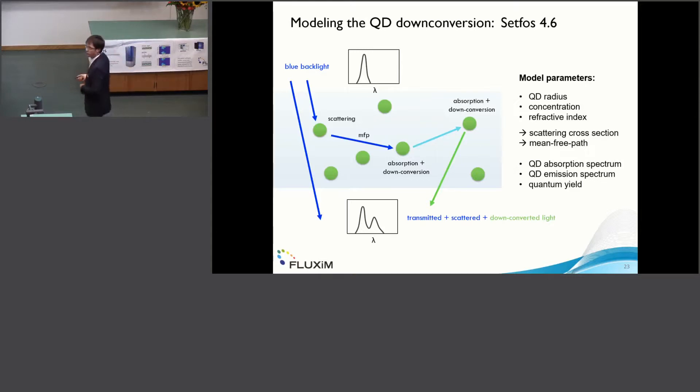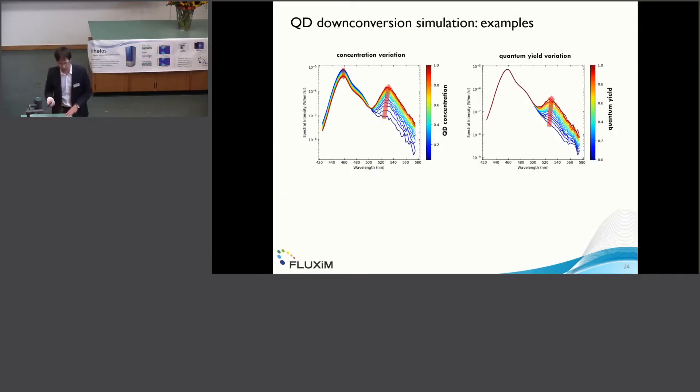Since the ZFOS version 4.6, we have released a model for quantum dot down-conversion. What we do is we have quite some parameters such as the quantum dot radius, its concentration, the refractive index of the quantum particles. From this we calculate scattering cross-section and an average mean-free path. We have then implemented a ray tracing engine which calculates the amount of transmitted, scattered and down-converted light as a function of the emission angle. Of course, this all also depends on the absorption and emission spectrum of the quantum dots.